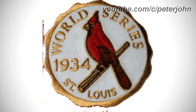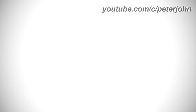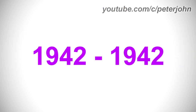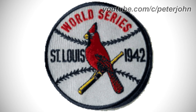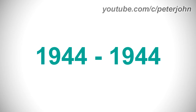1934-1934: there is a white circle on a yellow outline, and inside it there are the words World and Series in yellow text, and under them there is a red bird on a baseball bat, and on the left of the bat there is a yellow number 1934, and under it there are the words St. Lewis in yellow text. 1942-1942: there is a baseball on a black outline, and inside it there are the words World and Series in red text, and under them there is a red bird on a stick, and on the left of the bird there are the words St. Lewis in black text, and on the right there is a black number 1942.